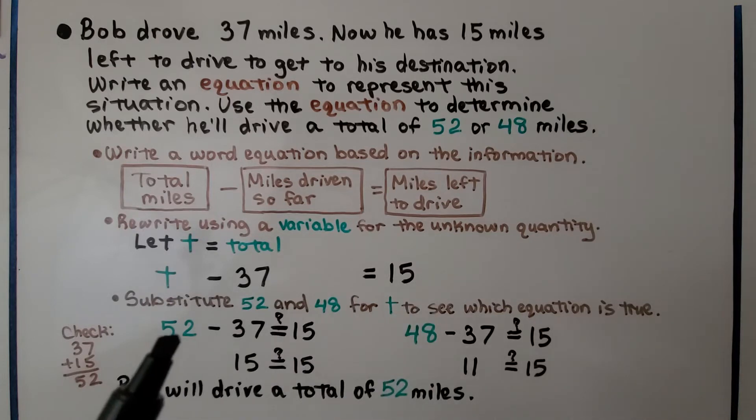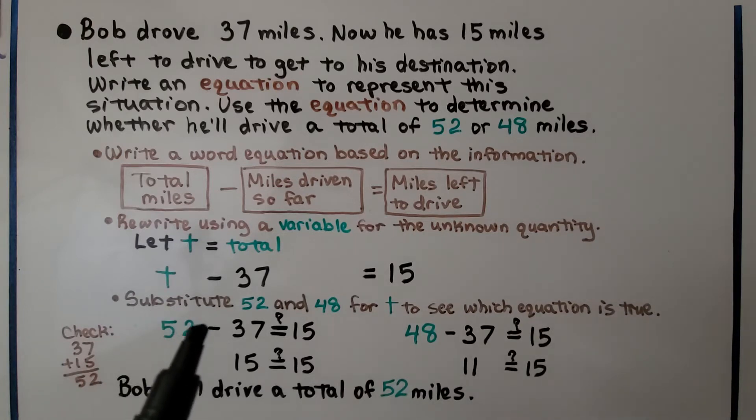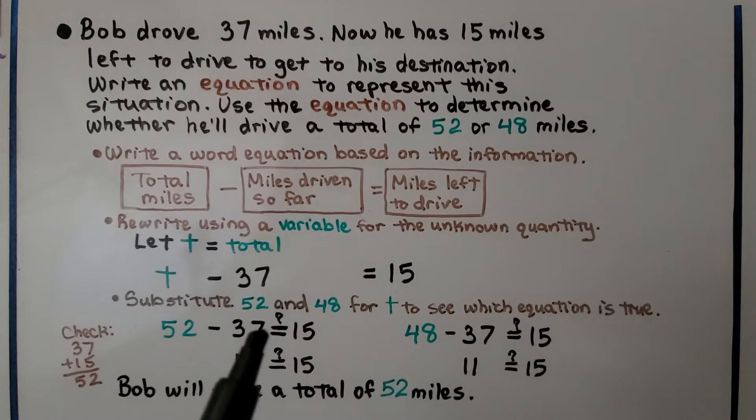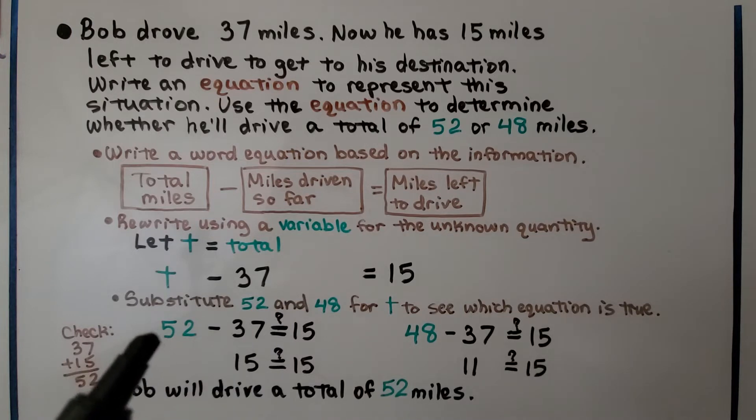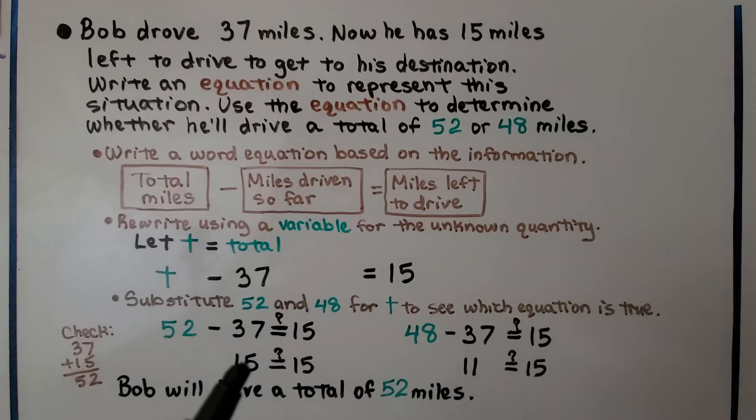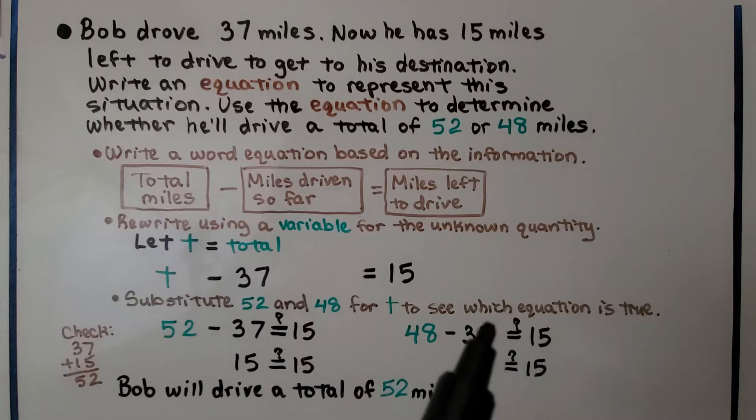We can substitute 52 and 48 for t to see which equation is true. 52 minus 37 is equal to 15. We're not sure, so we have an equal sign with a question mark over the top. And we can do 52 minus 37. It is equal to 15. Over here we have 48 minus 37. Is that equal to 15? We have a question mark over the equal sign. Well, that's equal to 11.